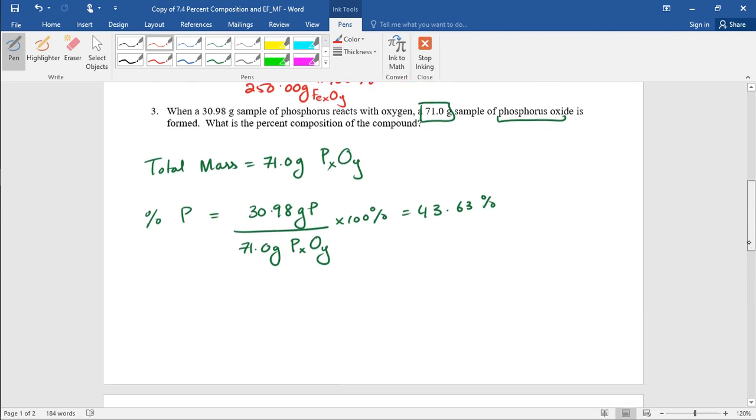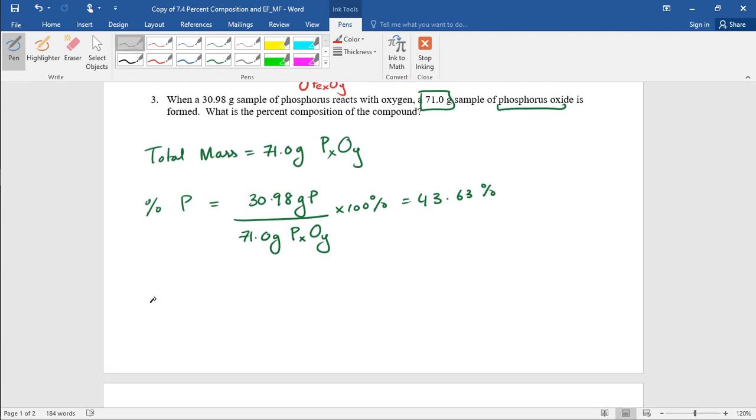We need the percent of oxygen. So percent of oxygen is just going to be 100 minus 43.63, which is 100 minus 43.63. That's 56.37%.